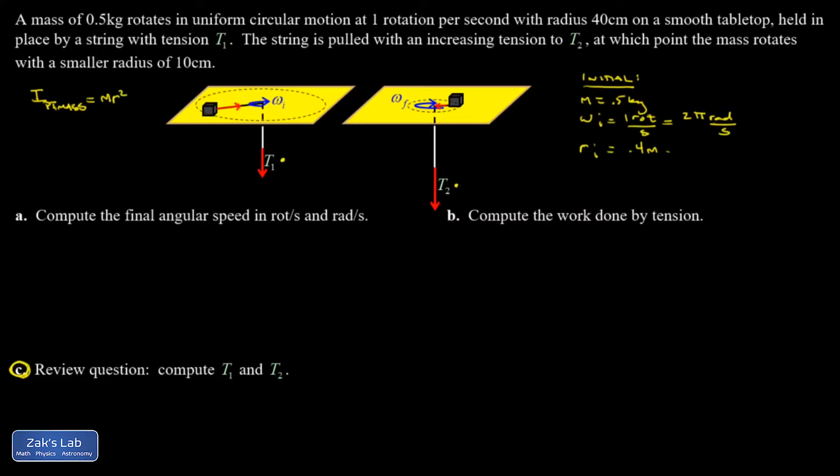So let's get started on part A. We want the final angular speed in rotations per second and radians per second. So angular momentum is conserved. Angular momentum is given by moment of inertia times angular velocity. My initial moment of inertia, I take the mass of this thing times the initial radius squared, omega initial. My final moment of inertia, mass times final radius squared, omega final.